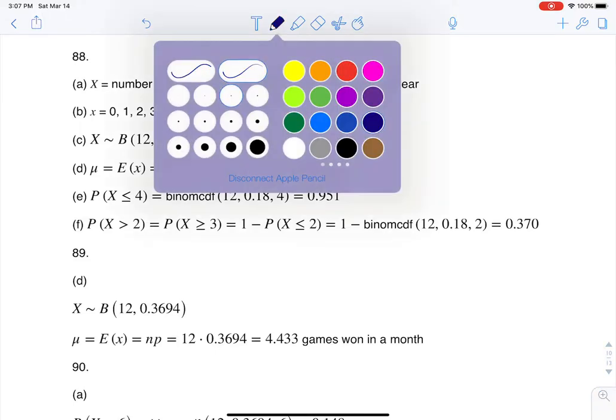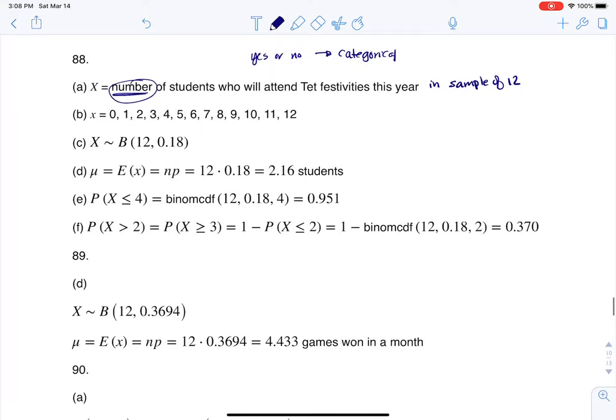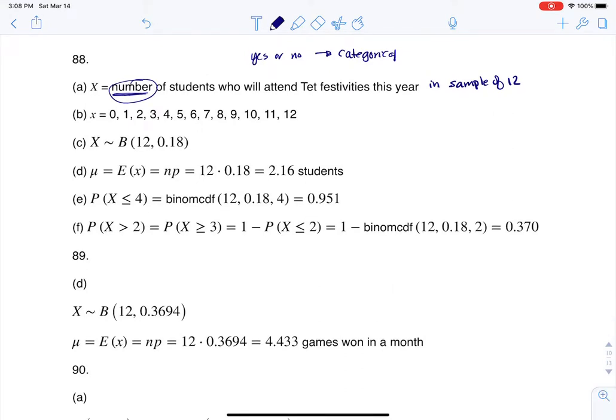So this is, I should say, if I want to be more specific in Part A, it's the number of students who will attend the Tet Festivities this year in my sample of 12. If I look at this, if I'm going to keep track of the number of students, I'm going to go up to each student and ask them, hey, do you plan on going to these Tet Festivities? They're either going to tell me their response is yes or no, which you might think was categorical.